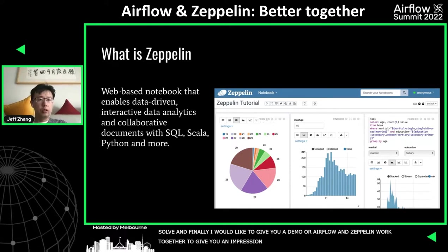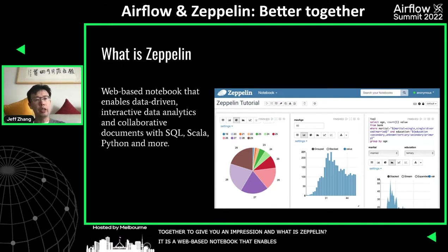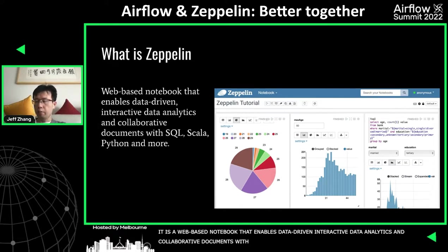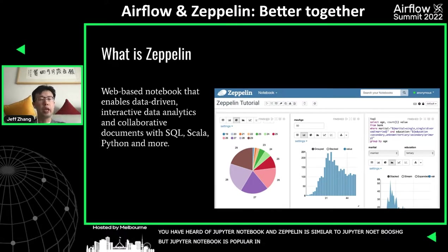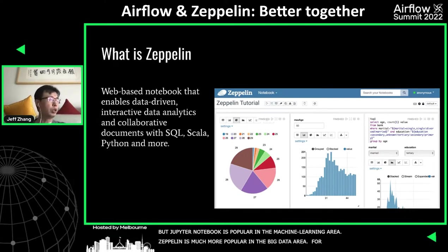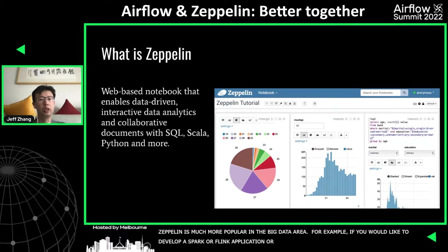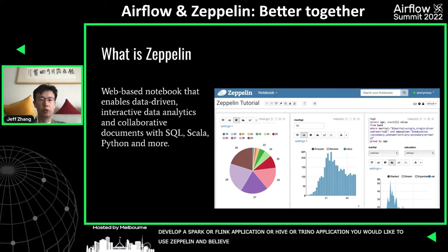So what is Zeppelin? Zeppelin is a web-based notebook that enables data-driven, interactive data analytics, and collaborative documents with Scala, Python, and more. Many of you have heard of Jupyter Notebook. Zeppelin is very similar to Jupyter Notebook, but Jupyter Notebook is very popular in the machine learning area, and Zeppelin is much more popular in the big data area. For example, if you'd like to develop a Spark, Flink, or Hive application, you would like to use Zeppelin.